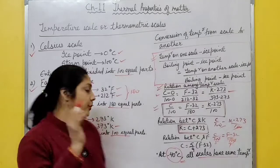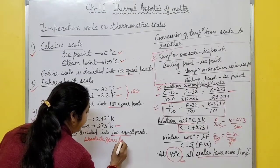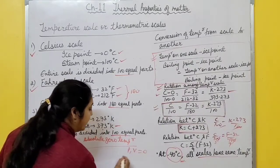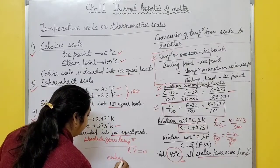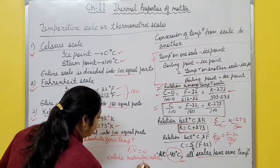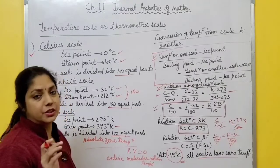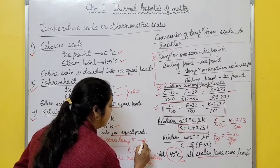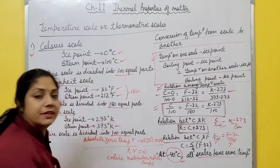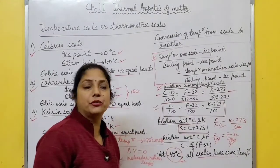There is one term called absolute zero temperature. It is the minimum temperature of an ideal gas at which pressure and volume become zero and entire molecular motion stops. This temperature is -273 degrees Celsius or 0 Kelvin, and it is called absolute zero temperature.